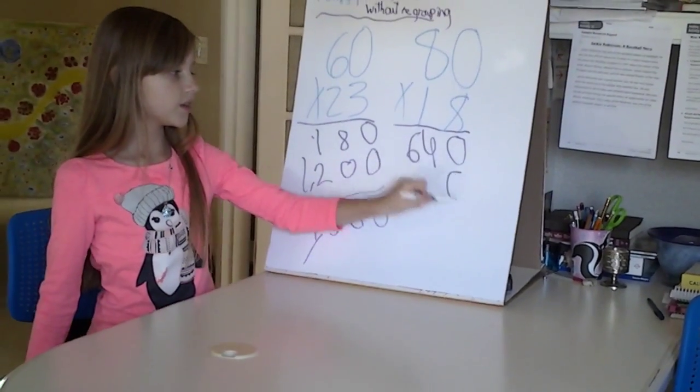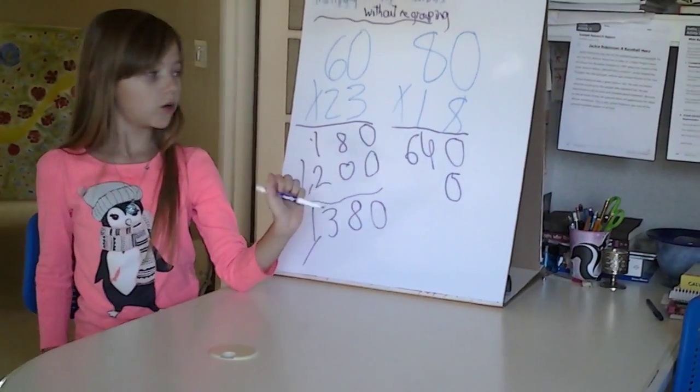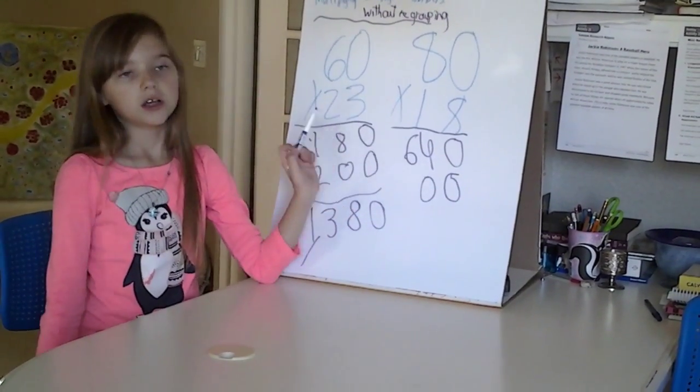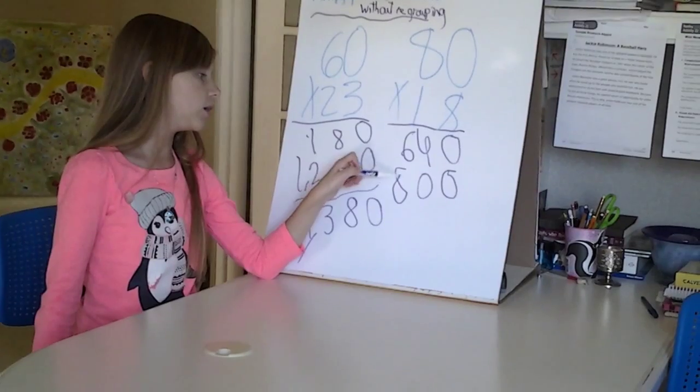Then, remember the 0, drop down the 0. Then you do 1 times 0, which is 0. And then 1 times 8, 8. Again,